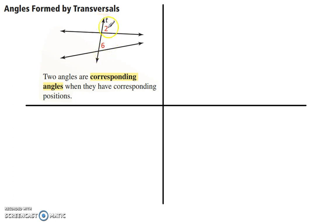These two angles, 2 and 6, are called corresponding angles. They are in the same position. Okay, corresponding angles have the same position or corresponding position. So it is top right. So on this intersection, 2 is top right. On this one, 6 is top right. So they are corresponding angles.